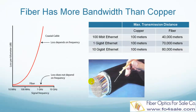Many people search on Google for the advantages of fiber over copper. Fiber's most important advantage is its almost unlimited bandwidth. The bad thing with copper is that the higher speed the signal, the larger loss it gets. As shown in this picture, in coaxial copper cable, the higher speed the signal, the higher its loss.